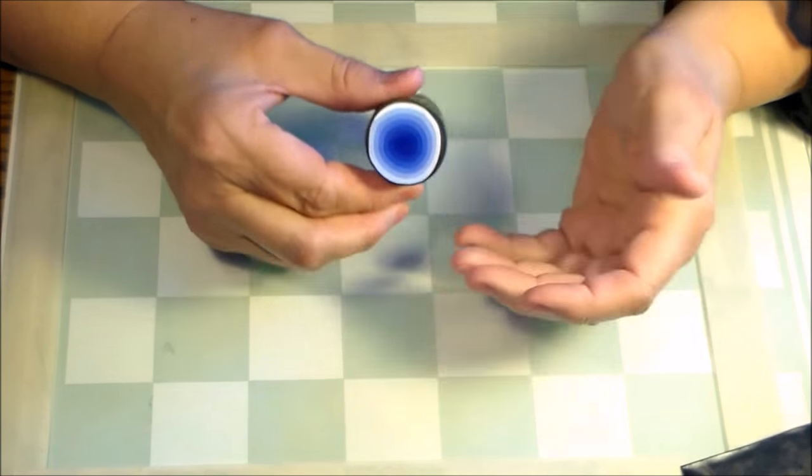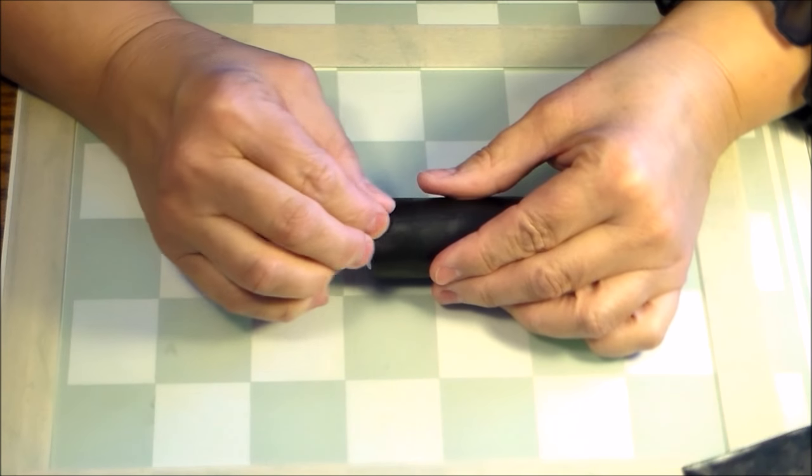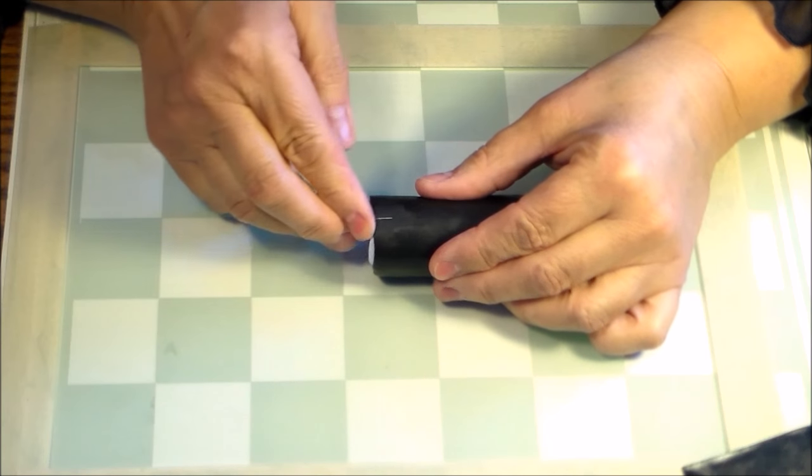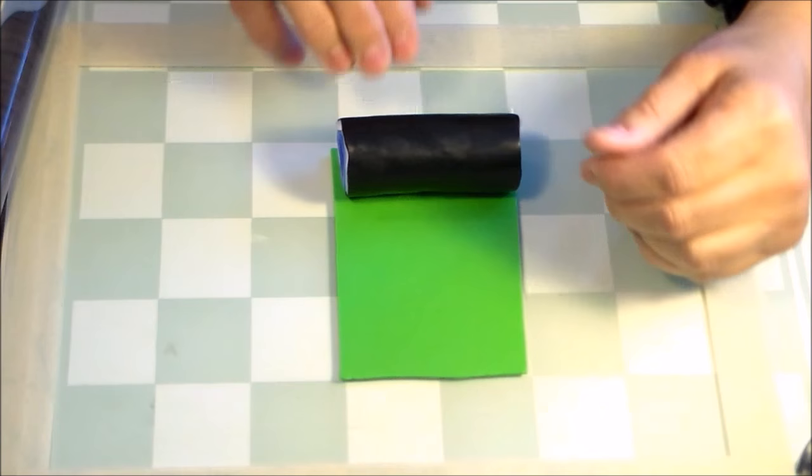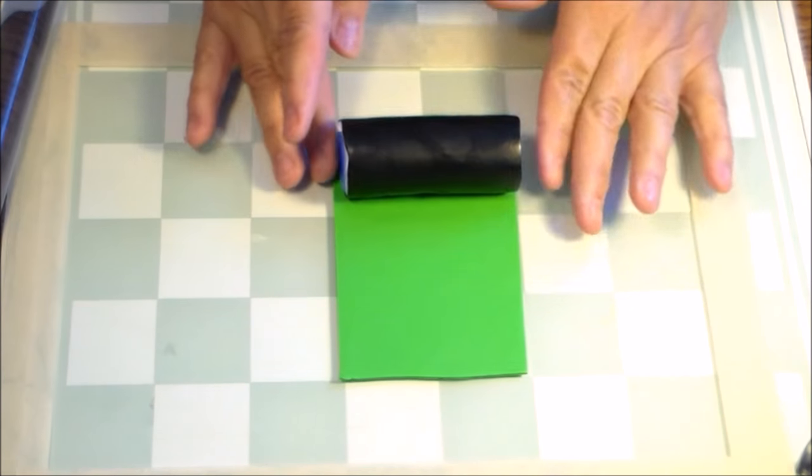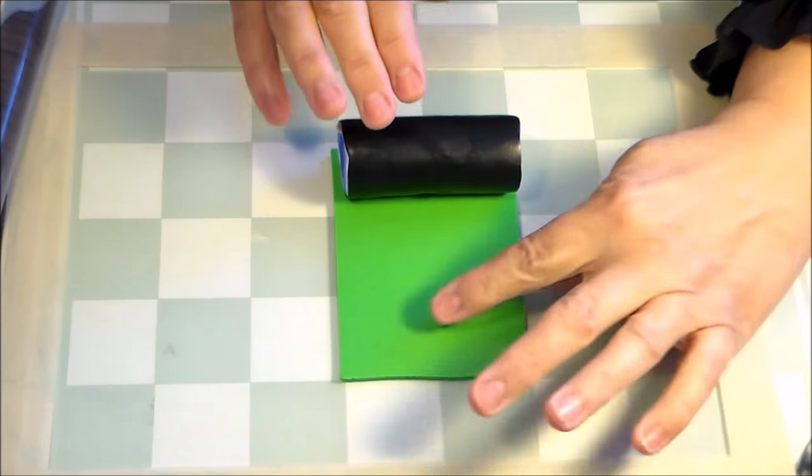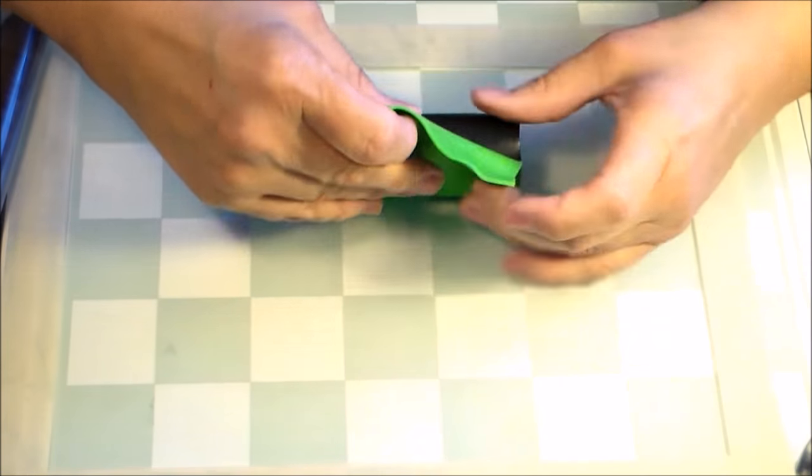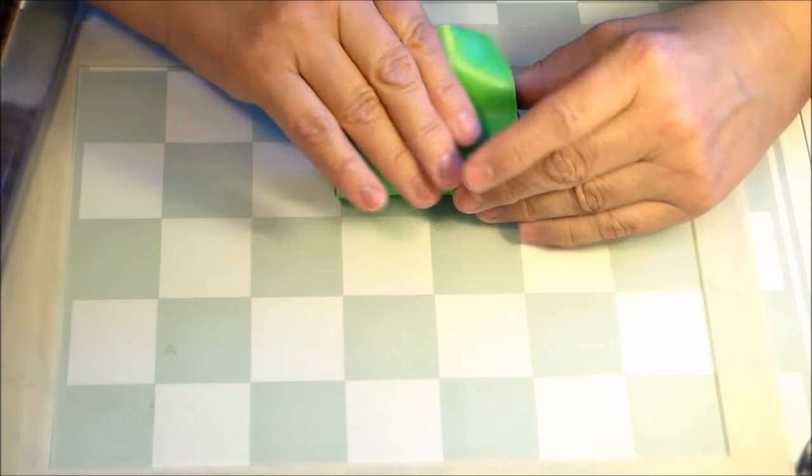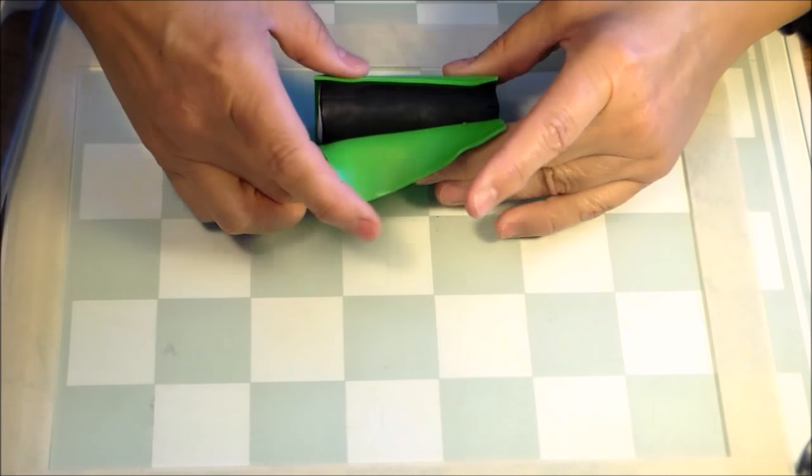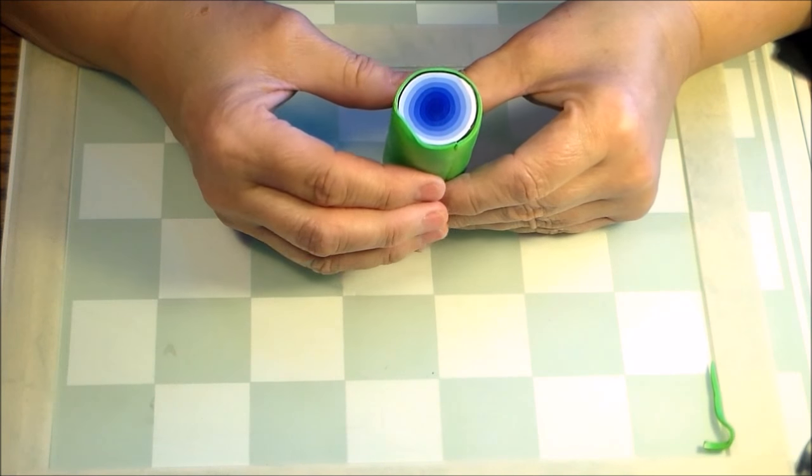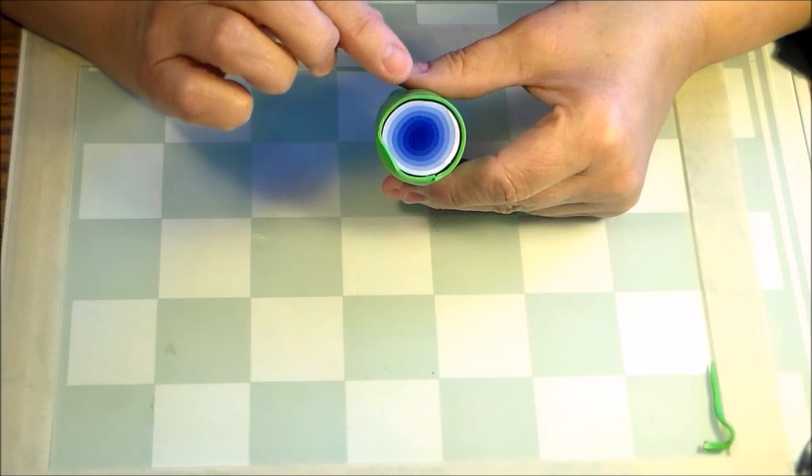Now we're going to put another wrap on this that's going to be a background color, and I'm going to use some green. And this is going to be a thicker setting on your clay machine. So I'm using my thin one here, and I'm going to go up to a four on this wrap, because it's making a little more of a statement. And it's a little bit more background than line. So we have our bullseye - black, green.